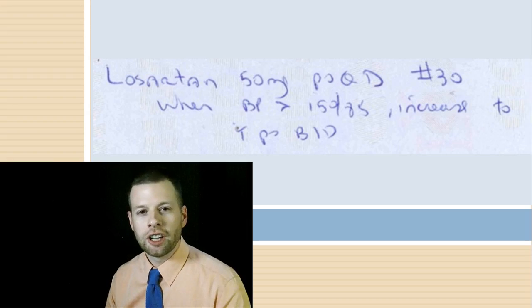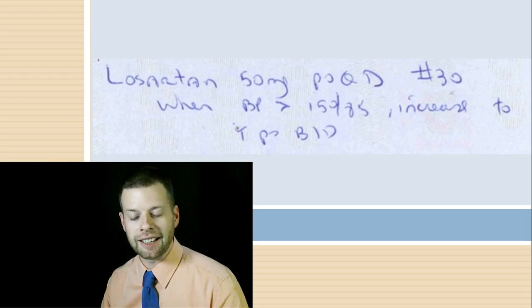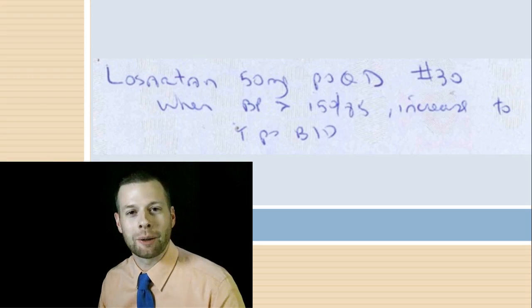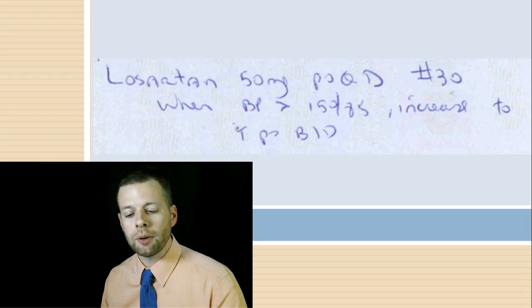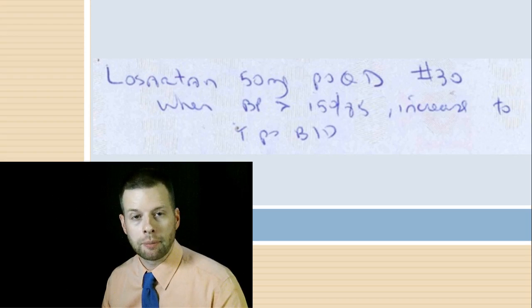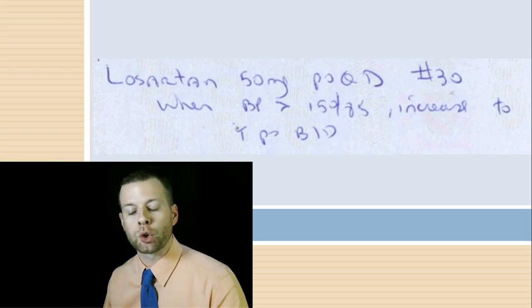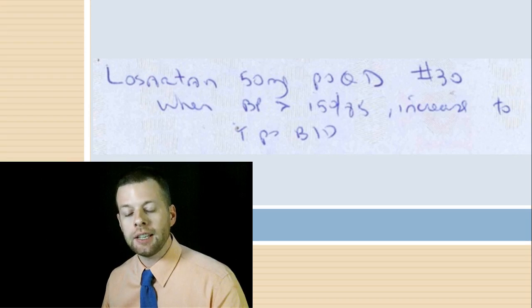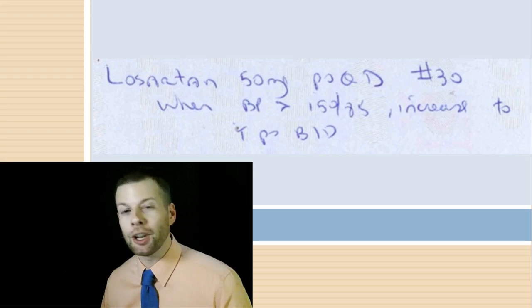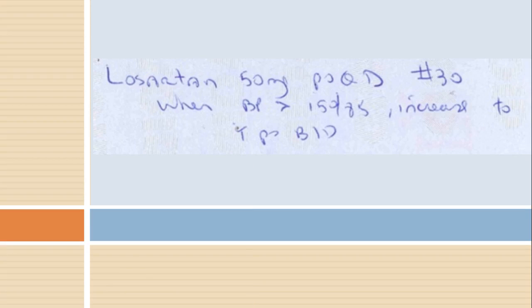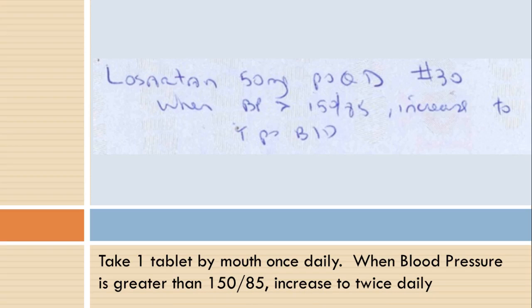Here's a real good one. Losartan 50 milligrams, PO QD. They didn't write Q daily like I like them to, but it doesn't matter — it's their prerogative. Notice this: it says when BP — blood pressure — is greater than 150 over 85, increase to one PO BID. So we have fairly long directions here: take one tablet by mouth once daily. When blood pressure is greater than 150 over 85, increase to twice daily. This shows prescriptions aren't always nice and easy — a lot of pharmacy tech classes show things in a nice font, but that's not really real world.